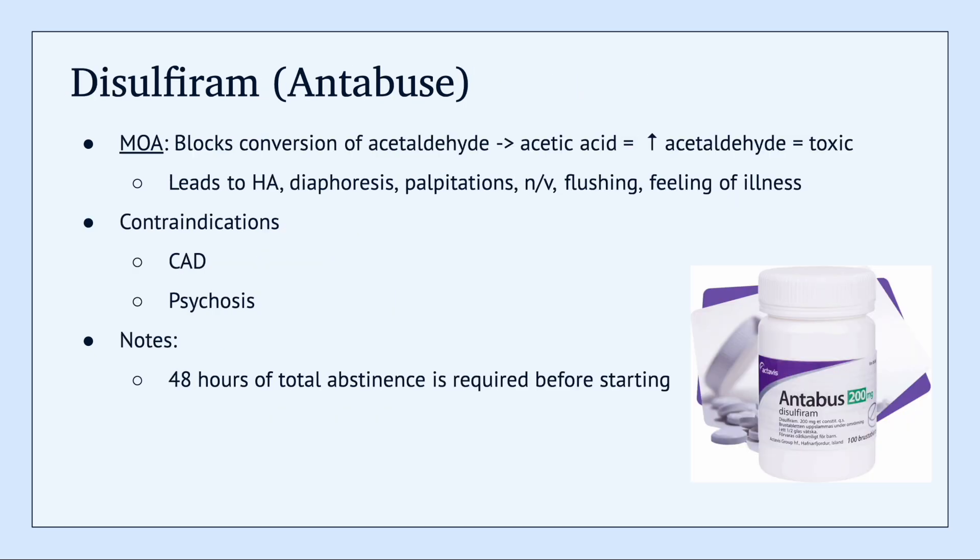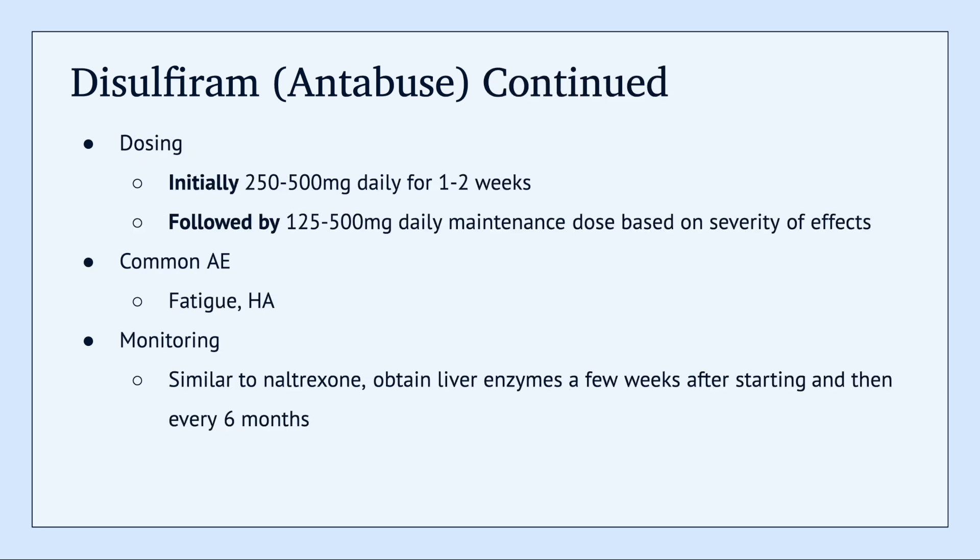The third FDA-approved medication is disulfiram, also known as Antabuse. This medication works by blocking the conversion of acetaldehyde to acetic acid. What happens is you get a buildup of acetaldehyde, and when a patient drinks, it creates a toxic reaction with headache, diaphoresis, palpitations, nausea, vomiting, flushing, and a general feeling of illness. Contraindications include coronary artery disease and psychosis. The patient must have 48 hours of total abstinence before starting Antabuse. For dosing, start with 250 to 500 mg daily for 1 to 2 weeks, followed by 125 to 500 mg daily as a maintenance dose. Similar to naltrexone, obtain liver enzymes a few weeks after starting, then at 6 months, and then every 6 months continuing.